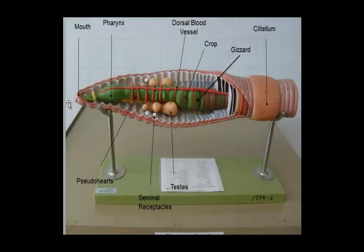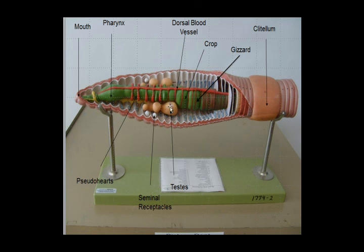Here's another model — a little different. There's the pharynx and the enlarged part. You can see the dorsal blood vessel. These are the little pseudo hearts off to the side. The big ones are the seminal vesicles and the smaller ones are the seminal receptacles. You have the crop and the gizzard, and you can see the clitellum on this model.